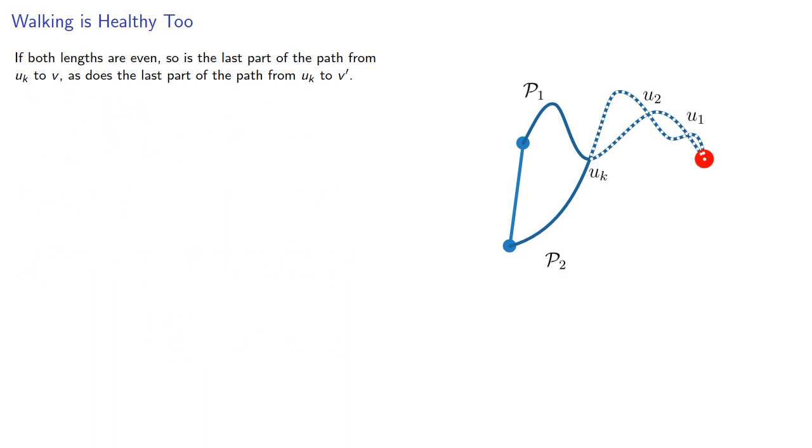If both lengths are even, so is the last part of the path from u to v, as does the last part of the path from u to v prime. And that means we do have this cycle from u to v to v prime to uk again, with odd length.